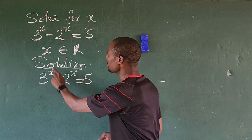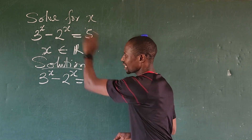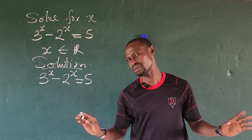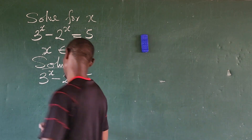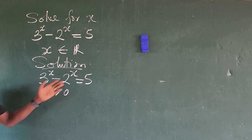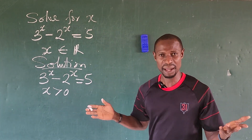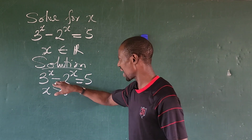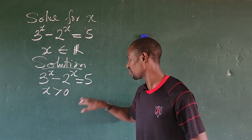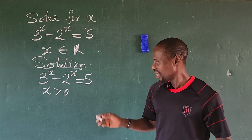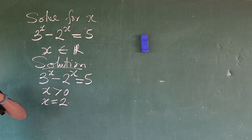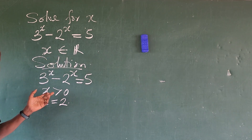How do we solve this? Since we're looking for the real value of x, it's clear from this expression that x cannot be negative. So x must be greater than zero. Given that constraint, the approach we use is trial and error. x = 1 doesn't work. If we put x = 2, we get 3² = 9 and 2² = 4, and 9 minus 4 equals 5. So the value of x is 2.